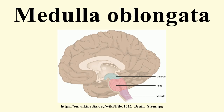Just above the tubercles, the posterior aspect of the medulla is occupied by a triangular fossa, which forms the lower part of the floor of the fourth ventricle. The fossa is bounded on either side by the inferior cerebellar peduncle, which connects the medulla to the cerebellum. The lower part of the medulla, immediately lateral to the cuneate fasciculus, is marked by another longitudinal elevation known as the tuberculum cinereum.